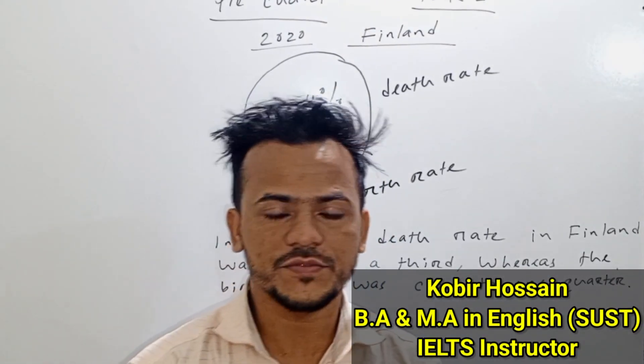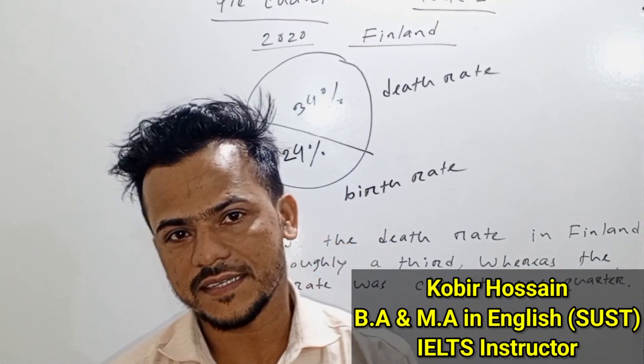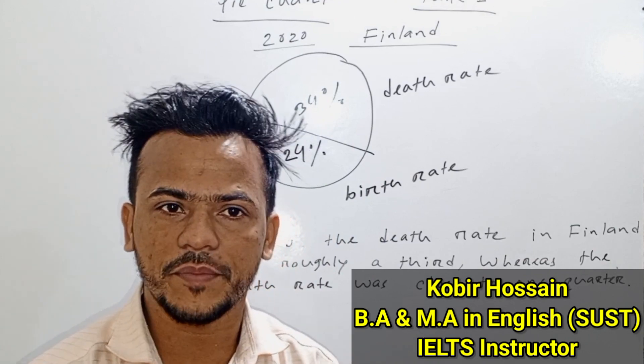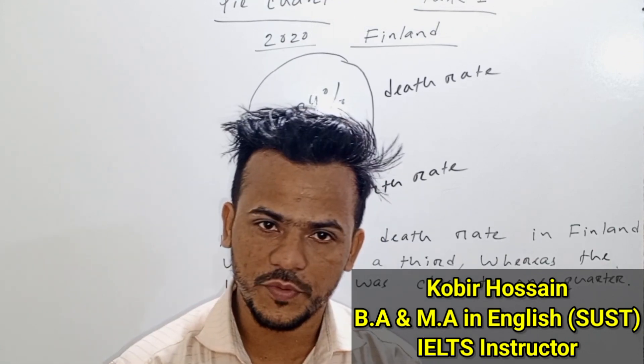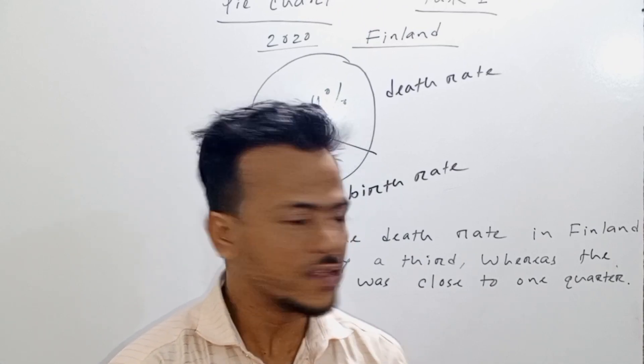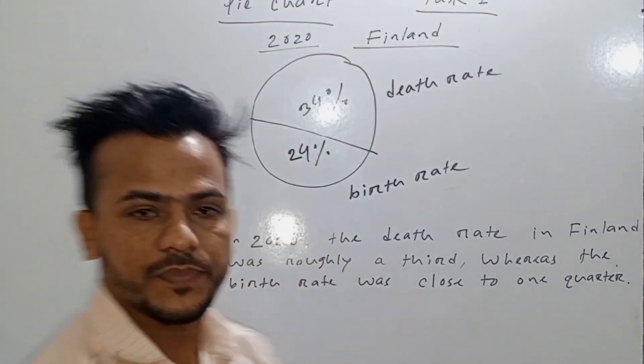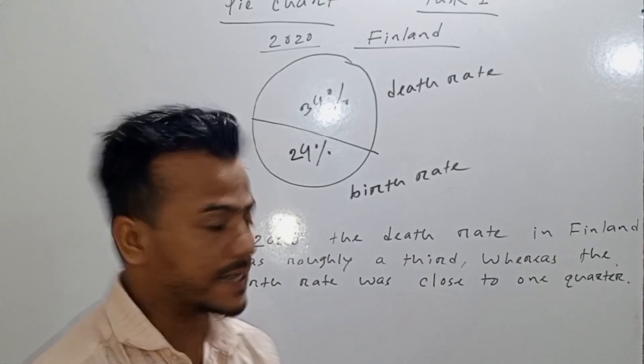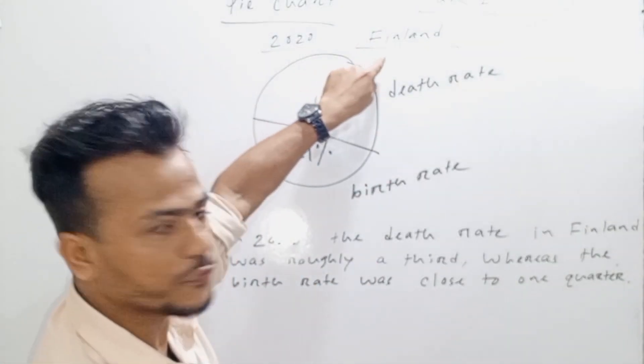I have IELTS writing task 1, and I have to write about how to describe data better with a 7 band or 7 band plus score. So, I have a simple example.